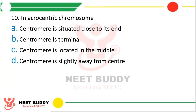Question ten. In acrocentric chromosomes: option A centromere is situated close to its end, option B centromere is terminal, option C centromere is located in the middle, or option D centromere is slightly away from the center. The correct answer is option A — centromere is situated close to its end. Chromosomes can be metacentric, submetacentric, acrocentric, and telocentric. In metacentric, the centromere divides the chromosome into two equal halves. In submetacentric, the centromere is slightly away from the middle. In acrocentric, the centromere is close to one end. In telocentric, the centromere is terminal.